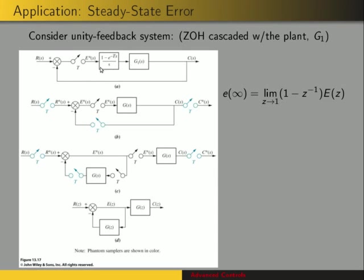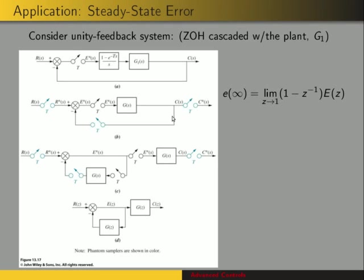Any subsystem with sampled input, we can add phantom samplers to the output. We get phantom samplers here and here, and if we move one past a pick-off point we just duplicate it, so we end up with two phantom samplers. For any summing junction with sampled output we can add phantom samplers at the input, giving us three phantom samplers. Now we want to move this past the pick-off point, so we end up duplicating the sampler and G on both branches.